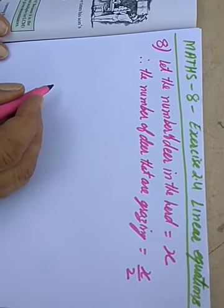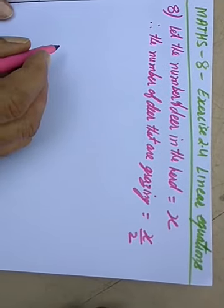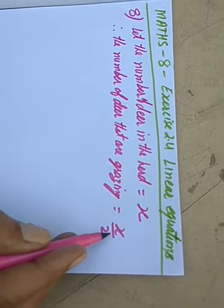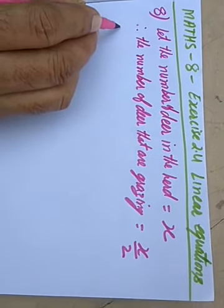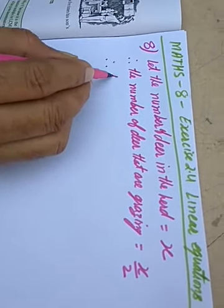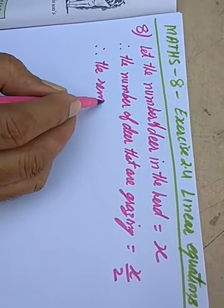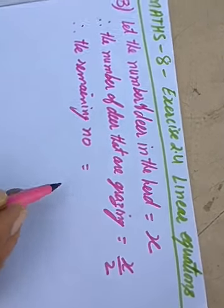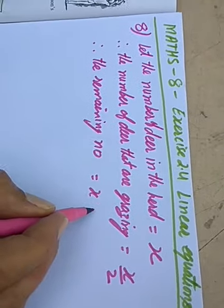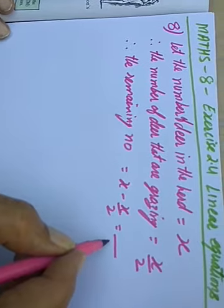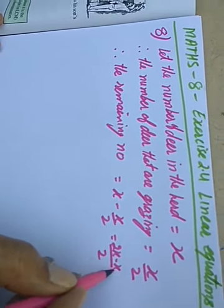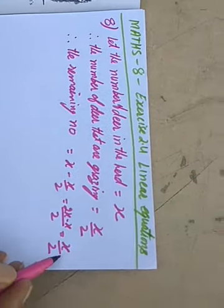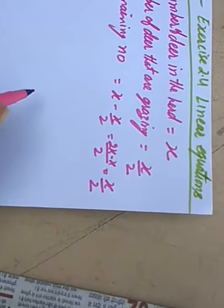It says three-fourths of the remaining are playing. If X upon two are grazing, then what is the remaining number? The remaining number is X minus X upon two, which gives 2X minus X upon two, that is again X upon two. So X upon two is the number of deer that are remaining.